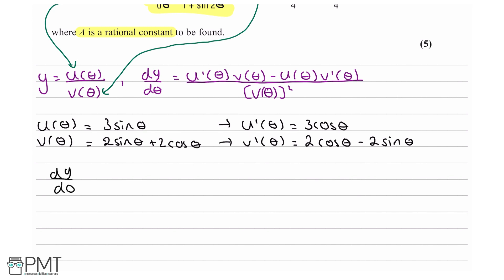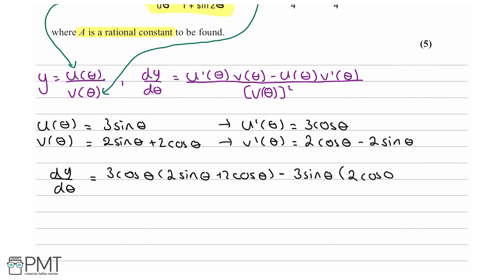Let's plug these all into our expression for dy/dθ. So: dy/dθ equals the derivative of u(θ), which is 3 cosine theta, times v(θ), which is 2 sine theta plus 2 cosine theta, minus u(θ), which is 3 sine theta, times the derivative of v(θ), which is 2 cosine theta minus 2 sine theta — all divided by v(θ) squared.